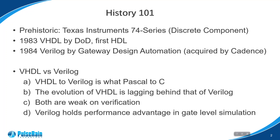B: The evolution of VHDL is lagging behind that of Verilog. Many useful features of Verilog 2001 can only find their counterparts in VHDL 2008. Wildcard and external names are two conspicuous examples. C: Both VHDL and Verilog are weak on verification. In the early days, they had to rely on other languages such as Vera, E, or even Tcl scripts for more advanced verification.